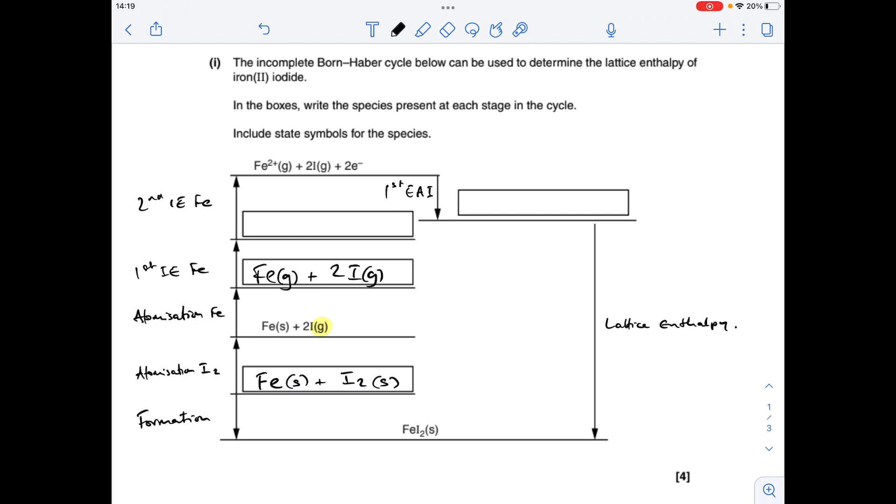Next thing we need to do is ionise the iron. So that's a two-stage process. So first ionisation energy, then second. Whatever you do, don't forget that electron there.